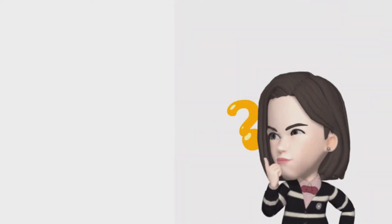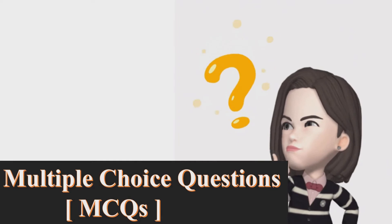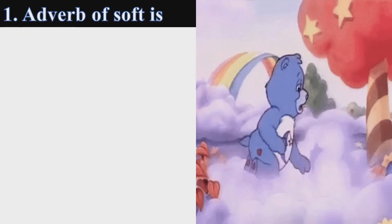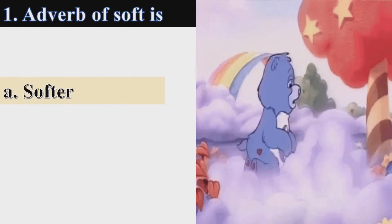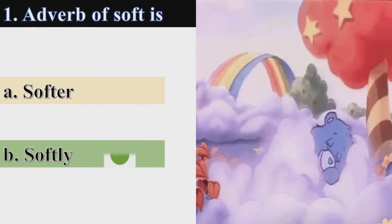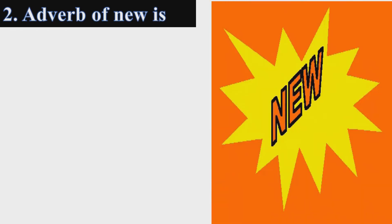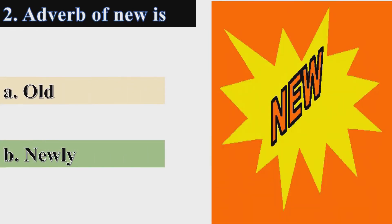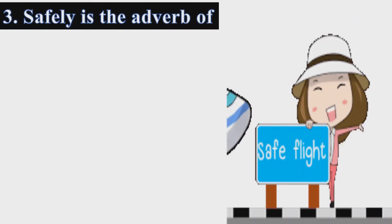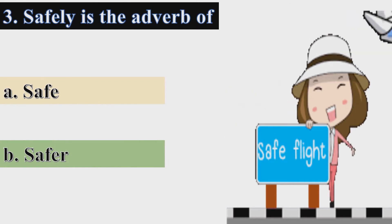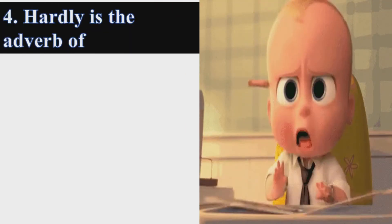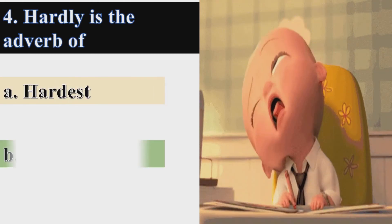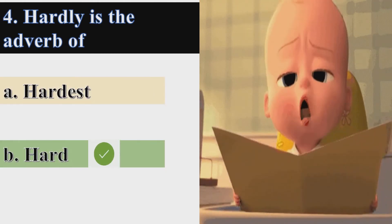Now students, let's see how much we have learned through MCQs. First question: the adverb of soft is softer or softly? The correct answer is softly. Next question: the adverb of new is old or newly? The correct answer is newly. Next: is safely the adverb of safe or safer? The correct answer is safe. Next: is hardly the adverb of hardest or hard? The correct answer is hard.